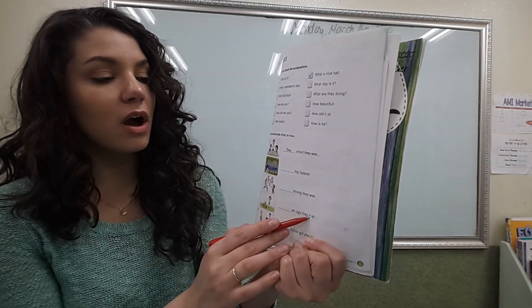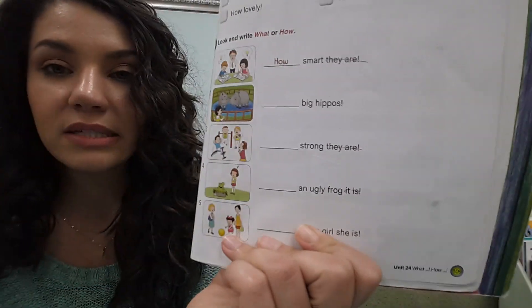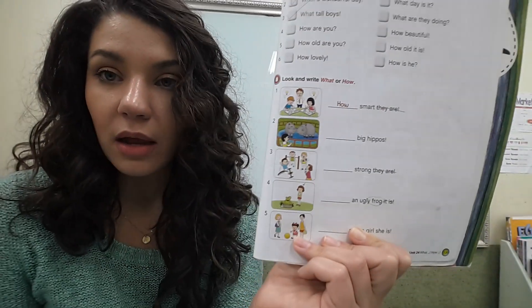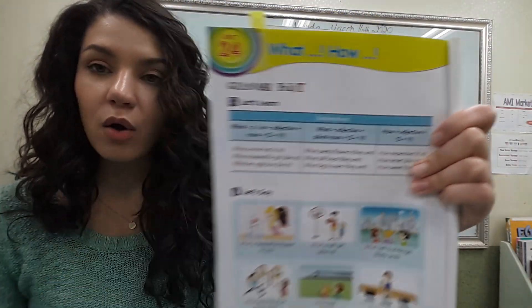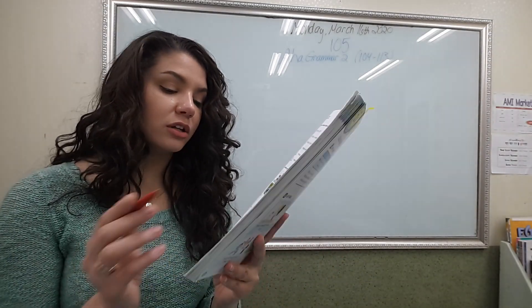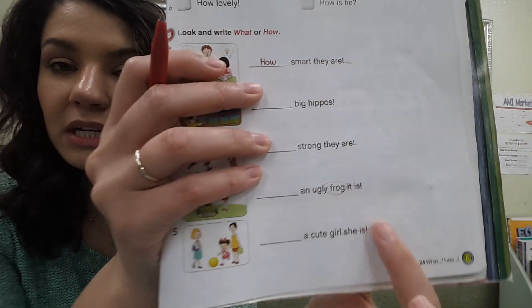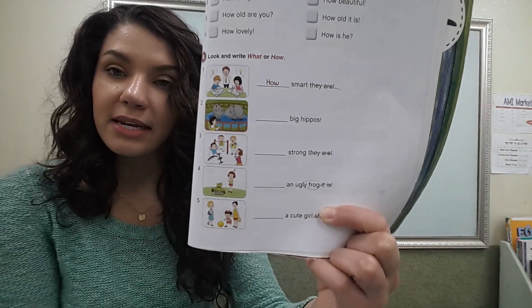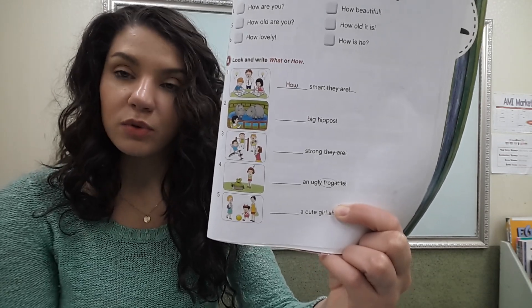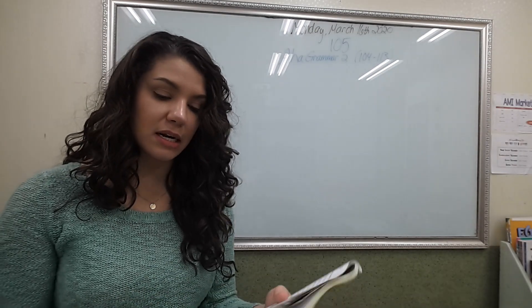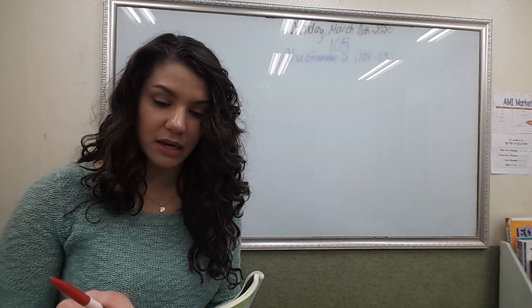Number five: 'a cute girl she is' — cross out 'she is.' 'A cute girl' — 'girl' is a noun, so when we have a noun, do we say 'how' or 'what'? We use 'what.' What a cute girl! If this is confusing, ask me more questions on KakaoTalk. I did that whole exercise with you because I thought it might be a little confusing.